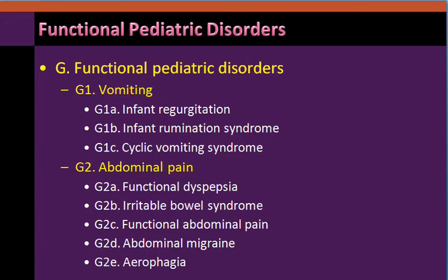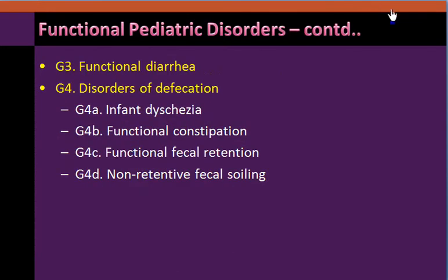We have a group of pediatric disorders — pediatric functional gastrointestinal disorders — grouped under G as functional pediatric disorders, with subcategories G1, G2, and so on. We are not going to consider them in this CME. These include functional pediatric disorders like functional diarrhea and disorders of defecation seen in children. With this, the list of various functional gastrointestinal disorders is complete as per the ROM criteria. Of them, we are going to focus our attention on only two important issues.